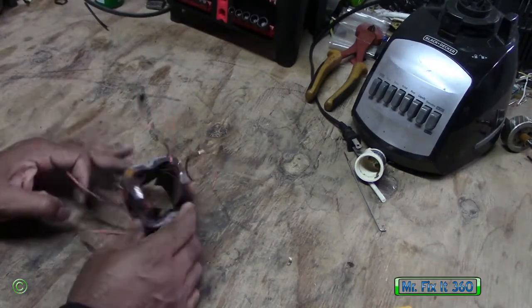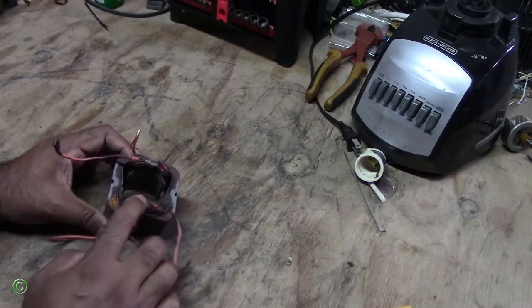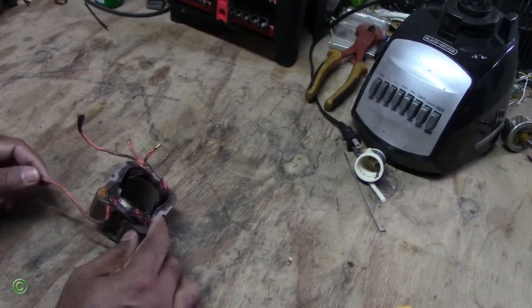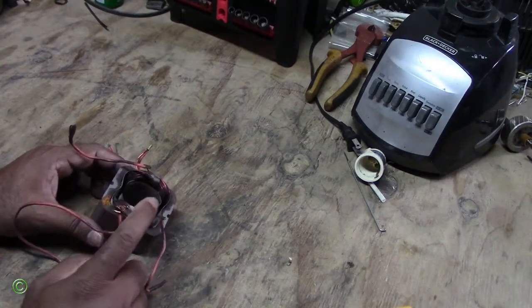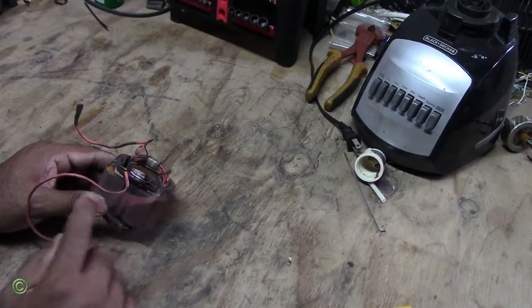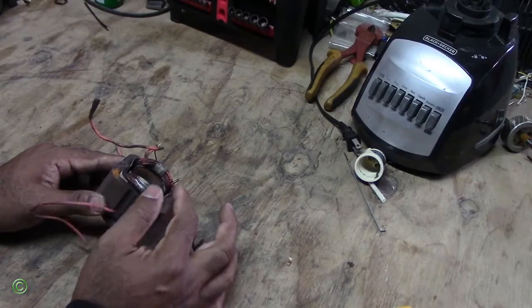This is the field winding. There are two field windings, one on this side and one on the other side. The field winding is one long copper wire that loops around many times. It has two ends because it's one long copper wire.